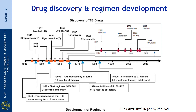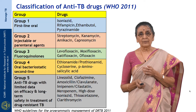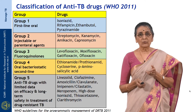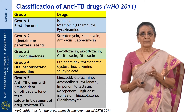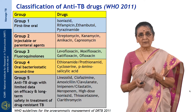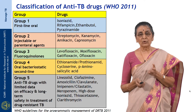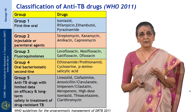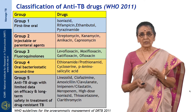The recently available drugs are being tried in phase 2 and phase 3 trials. The WHO classified anti-TB drugs in 2011 into 5 groups. Group 1 consists of fully oral drugs: INH, rifampicin, ethambutol, and pyrazinamide — the 4 key drugs in short course chemotherapy.